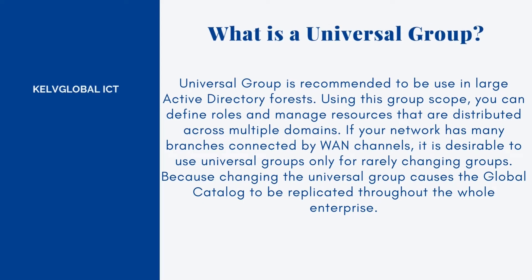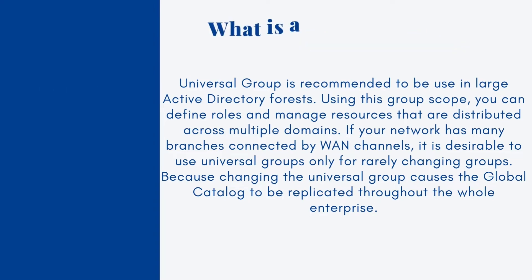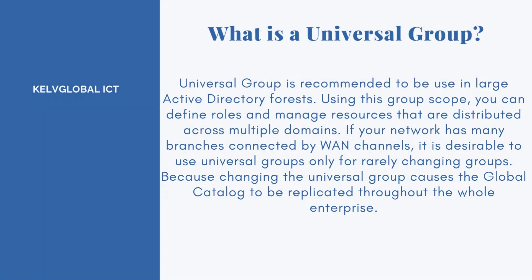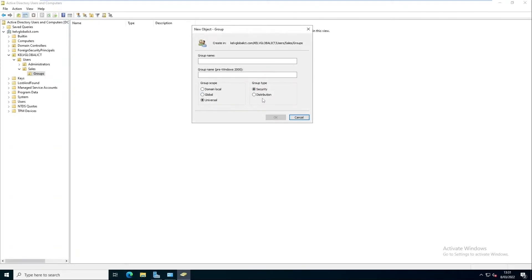That's where the Universal group comes in. It's recommended for use in a large Active Directory forest. For example, if you have an Active Directory in Belgium and a company in the United States with a trust relationship — what we call a forest — you can create a Universal group and add users from both domains to that group.